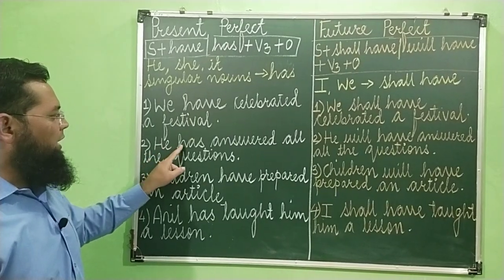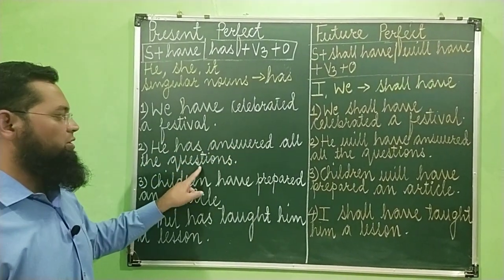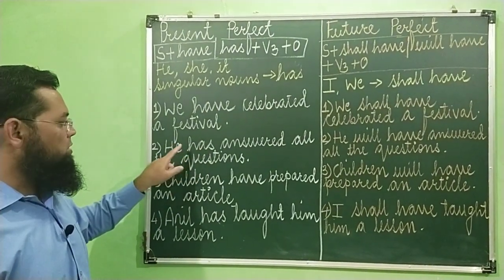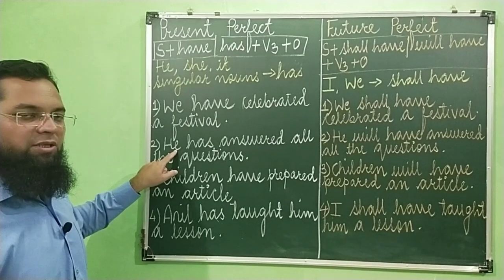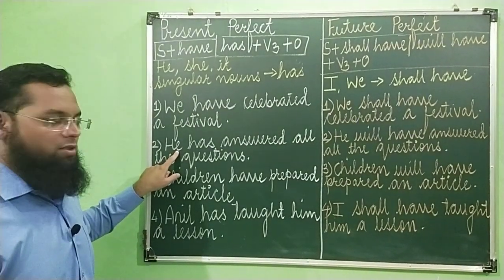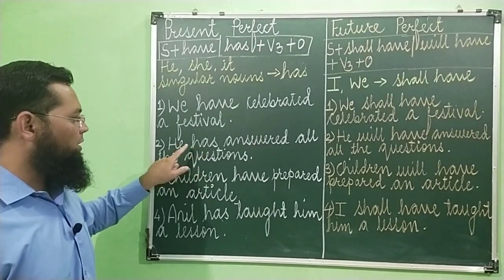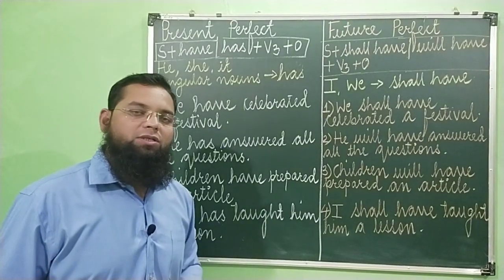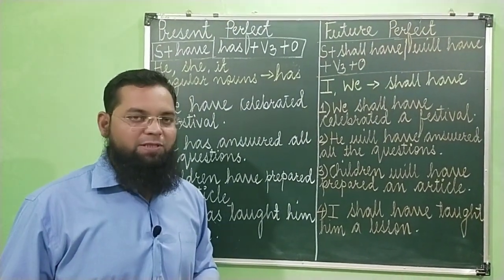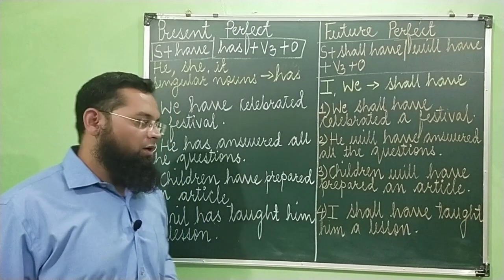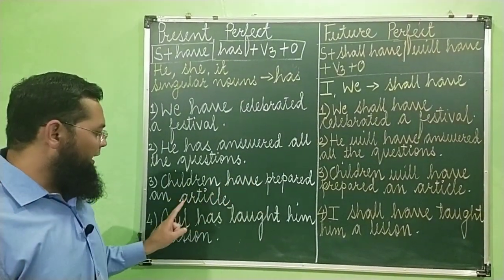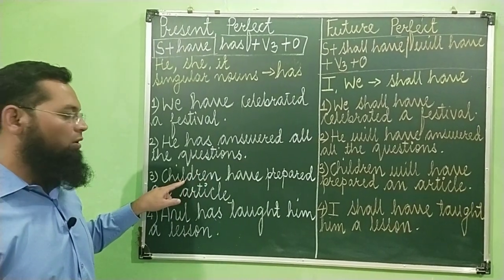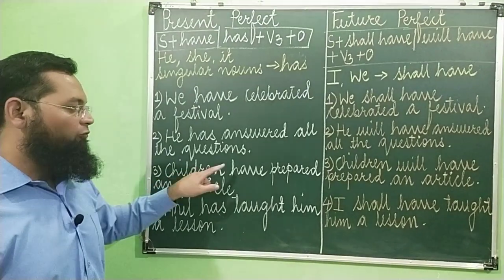Second example: 'He has answered all the questions.' I have used 'has' here because 'he' is the subject and he is singular third person, so with singular third person we have to use 'has'. Woh poore questions ke answers de chuka hai — present mein kaam pura ho gaya. Third example: 'Children have prepared an article.' Children is a noun in plural form, that's why we have to use 'have'.